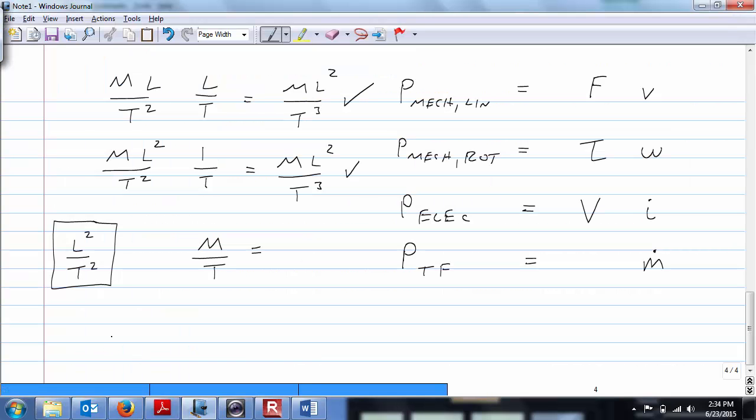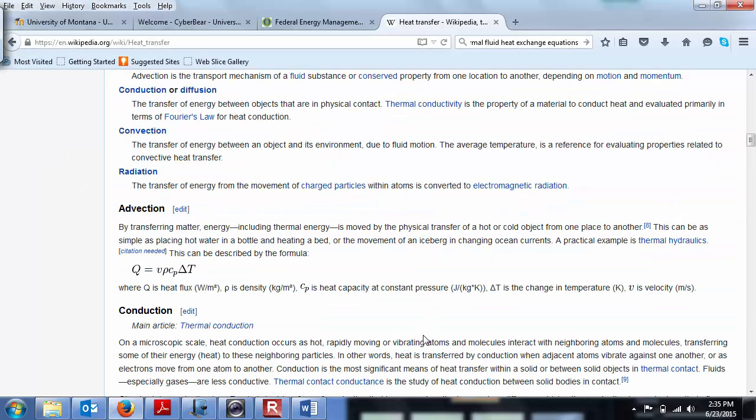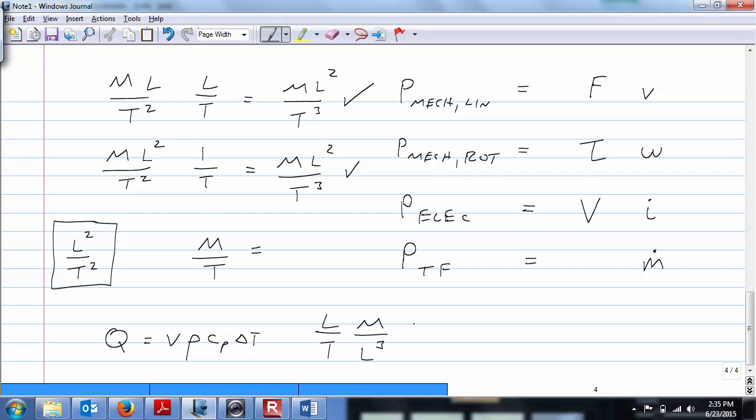Q equals V rho C sub P delta T. Now, we know that velocity is length per time, right? So we're just going to go right through our unit analysis, length per time. Density, mass per volume, length cubed, C sub P. We know that is energy per mass per Kelvin.